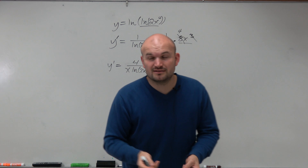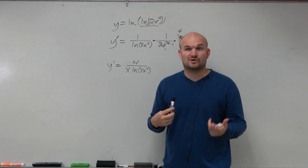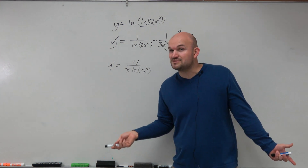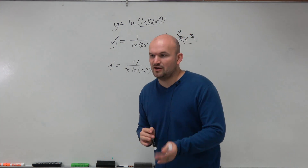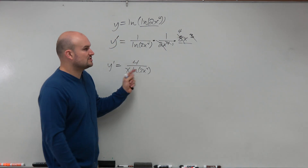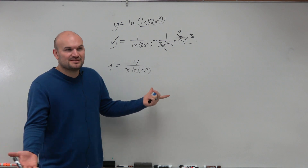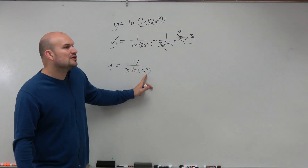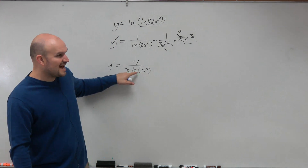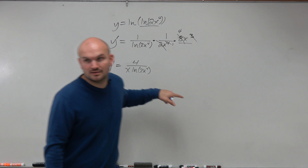Another thing to be careful with: some problems might be more confusing because sometimes we use parentheses for the ln of something and sometimes we don't. So it might be helpful to add parentheses so you don't get things confused. This is the ln of 2x to the fourth. Because if you didn't put it in parentheses, some people will take x and multiply it by x to the fourth and get x to the fifth. No — this is ln of this whole expression; you can't take that out and multiply it.